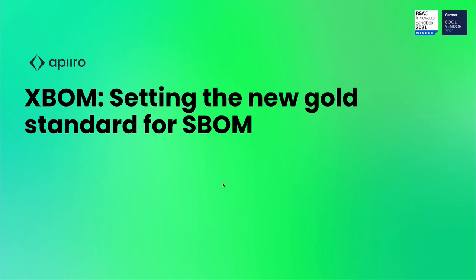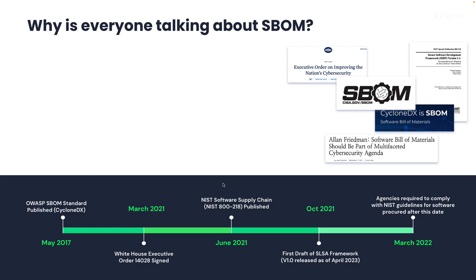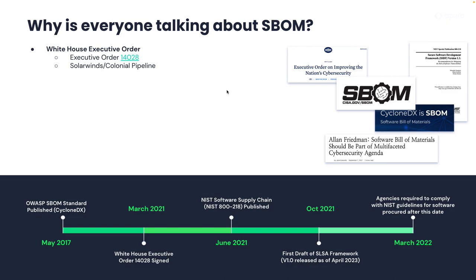When we talk about software bill of materials, why is it something that everybody is even talking about? We've seen software bill of materials in the application security space for quite a while now. OWASP created their SBOM standard called CycloneDX in May of 2017. Prior to that, we had other standards like SPDX. But over the last couple of years, software bill of materials have taken on a much more important role in application security programs. One of the reasons for that is largely because of the White House executive order that came out in March of 2021, due to the SolarWinds and Colonial Pipeline attacks.